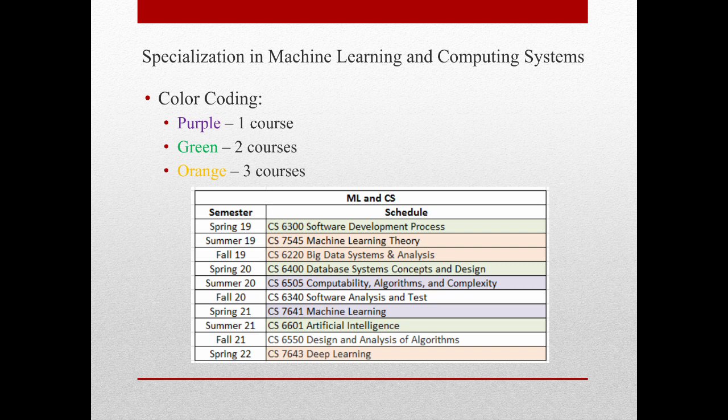Here you can see my projected plan of study. Each concentration has its own degree requirements, but for machine learning, I had to pick one course from two sections — those are the ones in purple — and three courses from another section — those are the ones in orange. Additionally, fundamental courses required across all concentrations are shown in green.